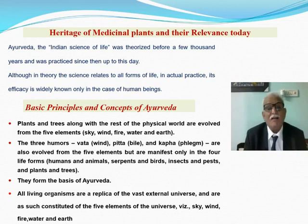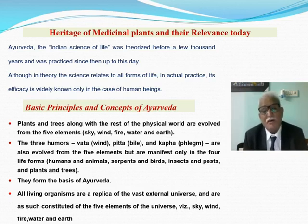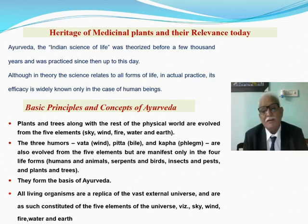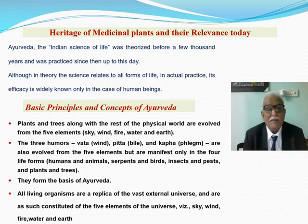What are the basic principles and concepts of Ayurveda? Plants and trees, along with the rest of the physical world, are evolved from five elements: sky, wind, fire, water, and earth. The three doshas — Vata, Pitta, and Kapha — are also evolved from these five elements but are manifest only in four life forms: humans and animals, serpents and birds, insects and pests, and plants and trees.